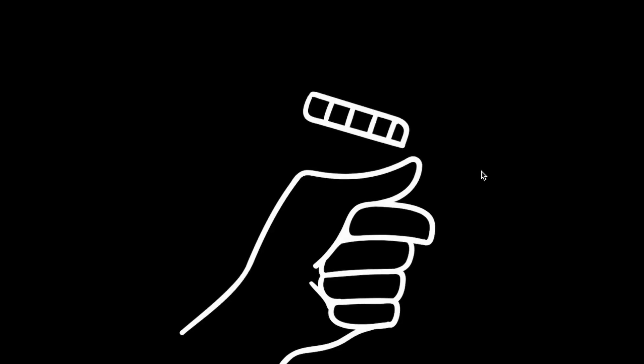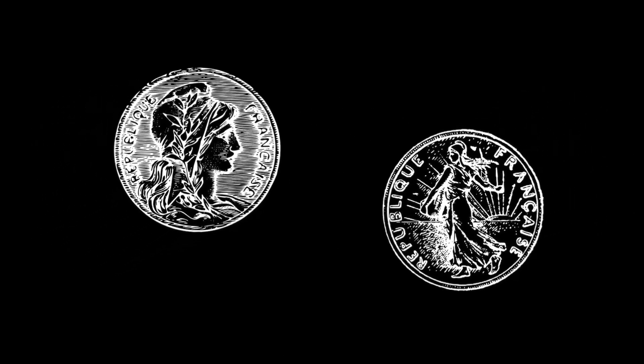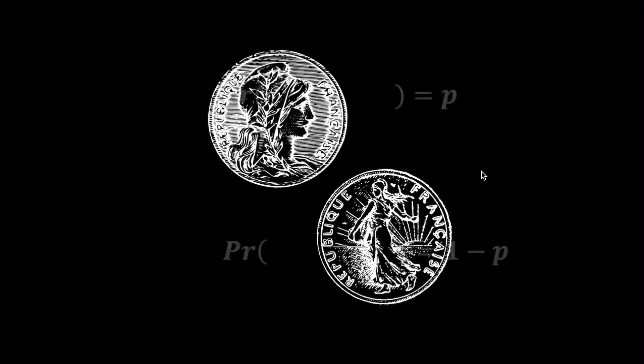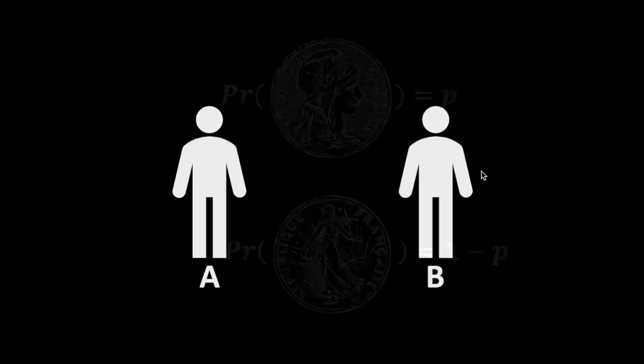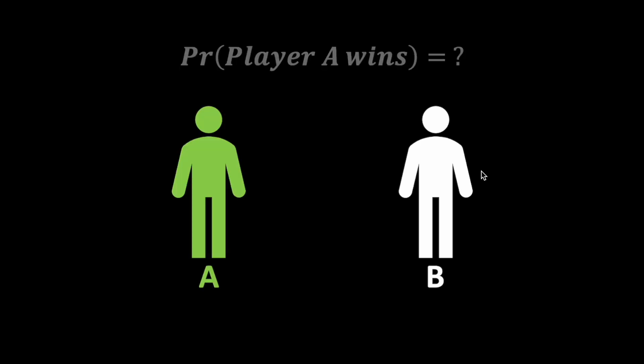There are two players, player A and player B. They will take turns flipping an unfair coin, where the probability of heads is P and tails is 1-P. The first player to flip a heads wins. If player A starts first, what is the probability that A will win the game?